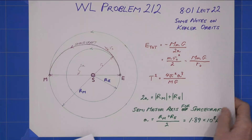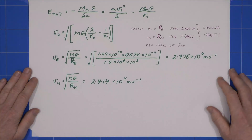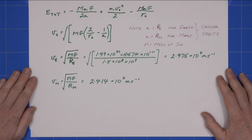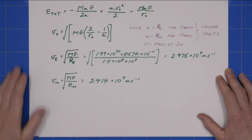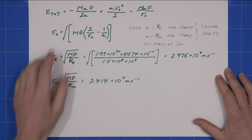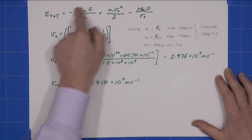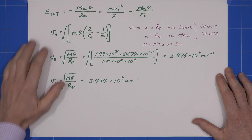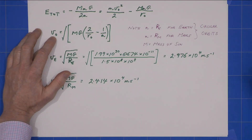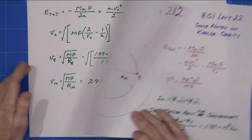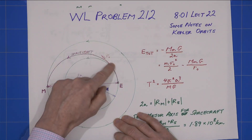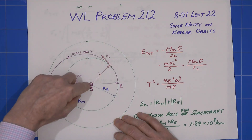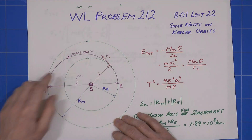That's the semi-major axis value we'll use later in the problem. From the equation for total orbital energy, I can rearrange to get the velocity at any point in our travels, related to the distance we are from the Sun.